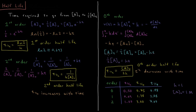For the zero-order half-life, the concentration at that time equals one-half the initial concentration. So one-half A0 equals A0 minus kt. Subtracting A0 from both sides: minus one-half A0 equals minus kt. Canceling the minus signs gives one-half A0 equals kt, and dividing both sides by k gives the zero-order half-life equal to A0 divided by 2k, the initial concentration divided by 2 times the rate constant.